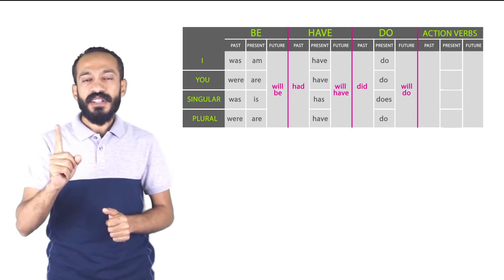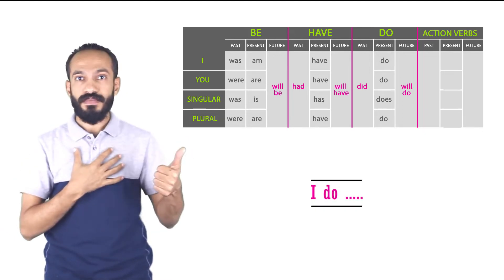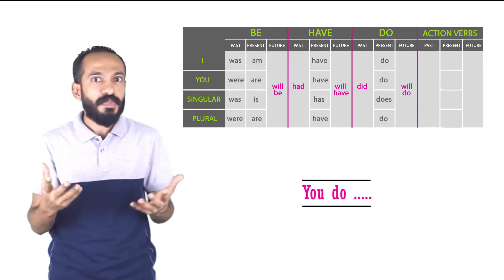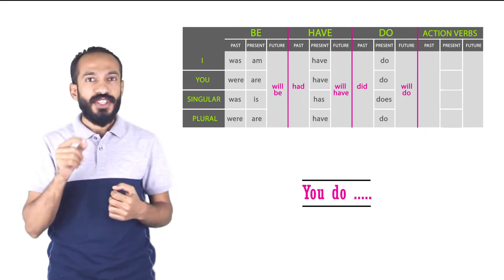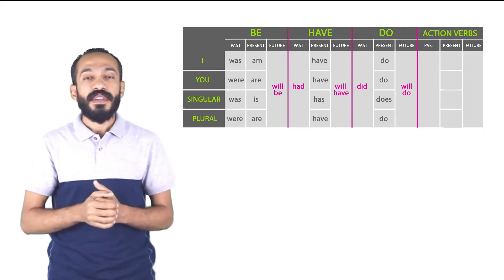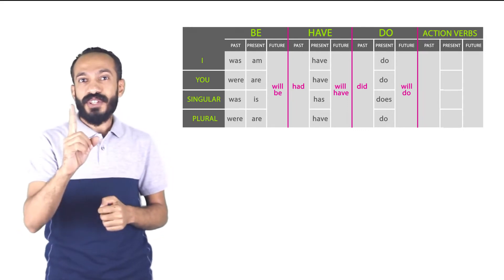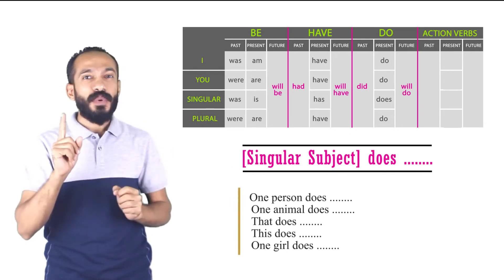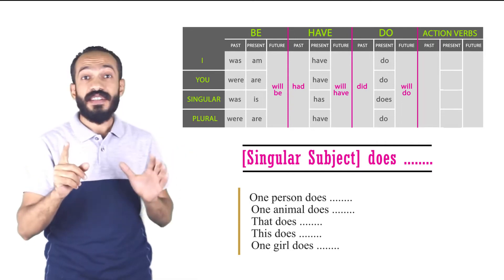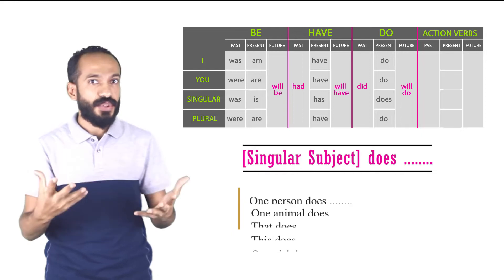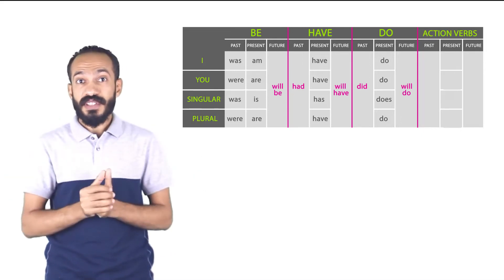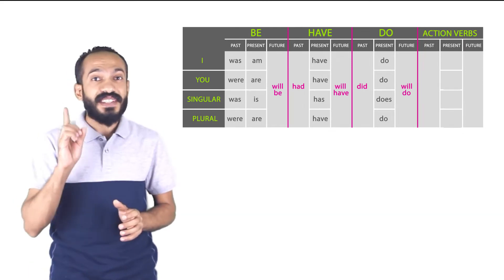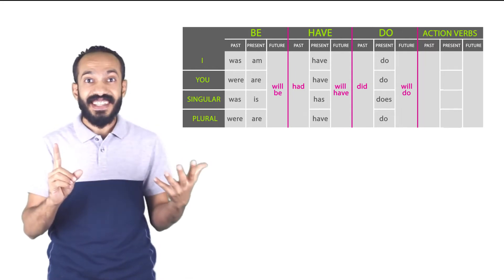Every time you talk about yourself, you say 'I do.' When you talk to other people: 'you do,' whether you're talking to one person or lots of people. If you're talking about singular subjects, only then you're going to be using 'does' — one person does, one animal does, that does, this does, one girl does. If you're talking about plural subjects, you use 'do.' The rule says: use 'do' all the way except when talking about a singular subject — you use 'does' in that case.